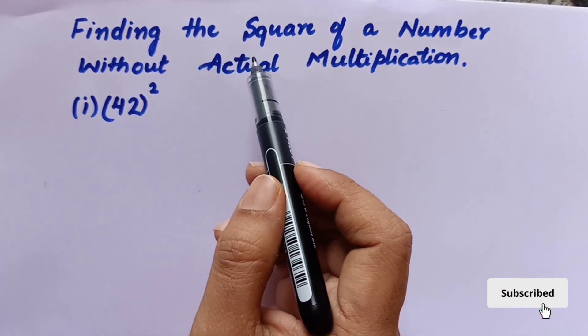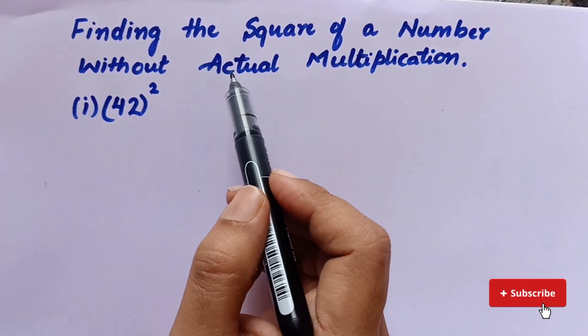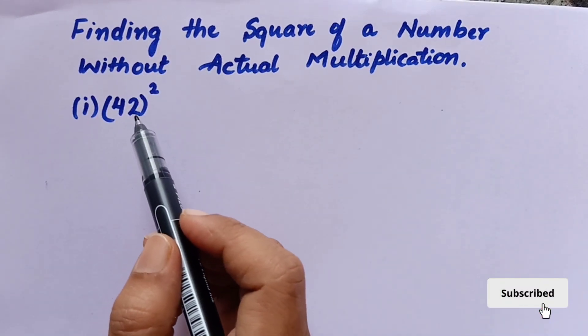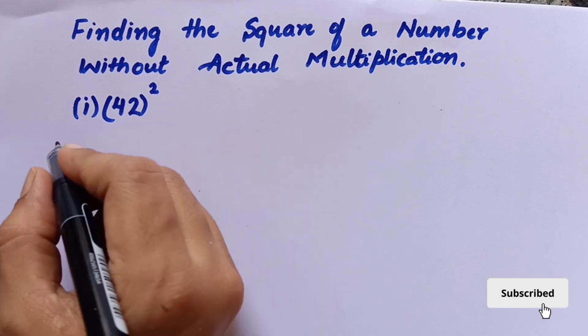Hi everyone, welcome back to my channel Train Tutor. In this session we'll see how to find the square of a number without actual multiplication. Here we are going to find the square of 42.